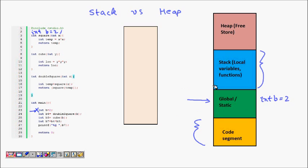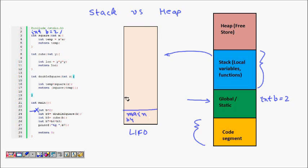The stack is very important. The first function called is main, so main goes onto the stack. Inside main we define variables, like b4, and then we call a function double_square(b). The stack acts like a LIFO — last in, first out. So double_square is pushed on, and it receives an argument z, has a local variable temp, and returns the square of temp.